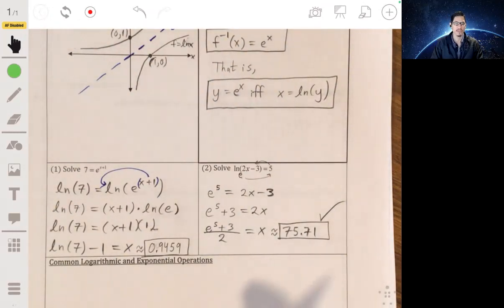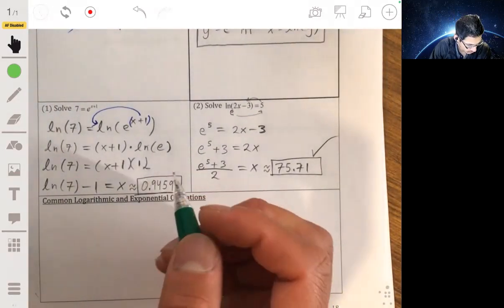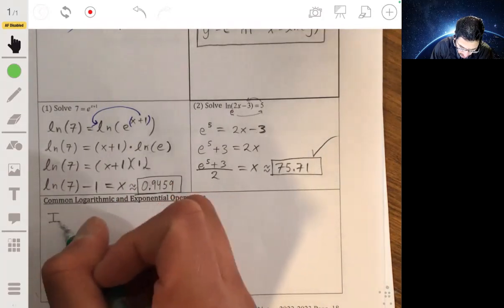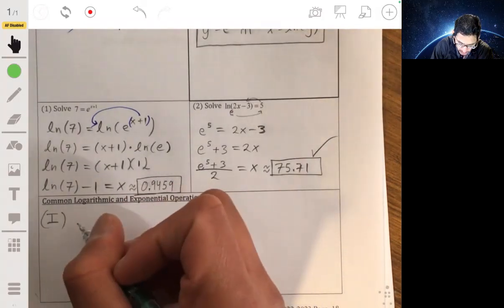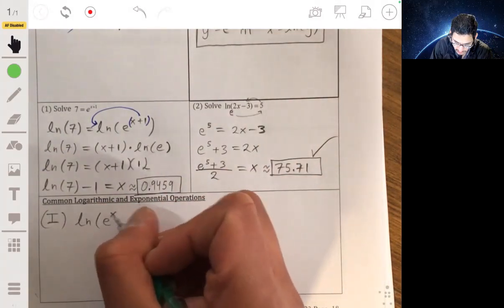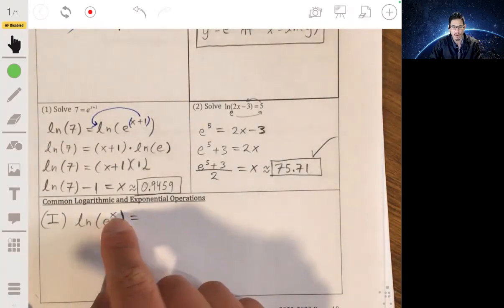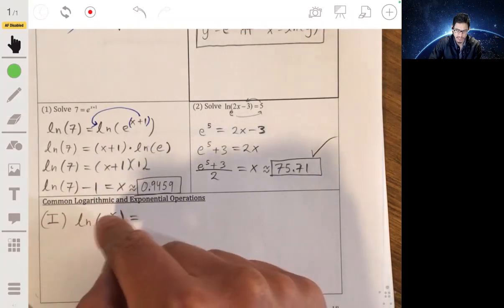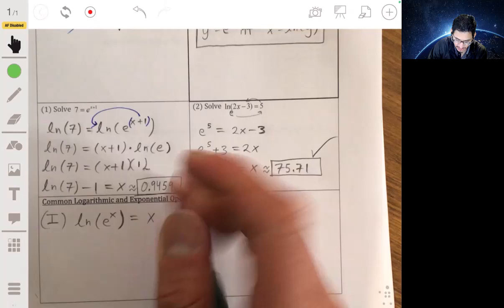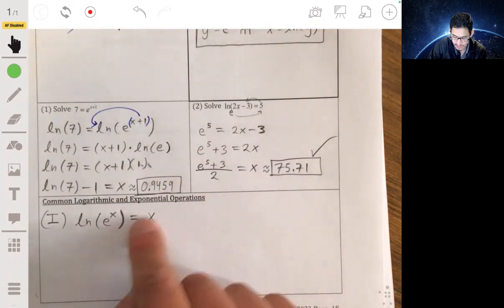So let's review some of the common log and exponential operations. So first one that we have, that we kind of reviewed here, is that if we have the natural log of e to the x, then using that exponent or the power property, that x just becomes the coefficient. So it becomes x times the natural log of e, which is basically just leaves us as x times 1. So this is just equal to x.